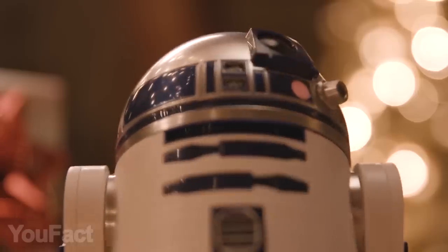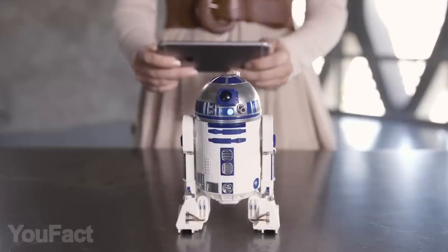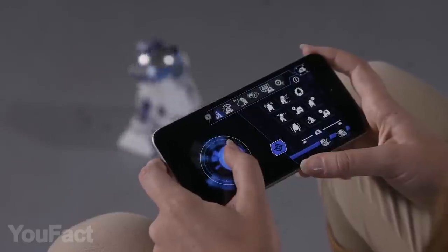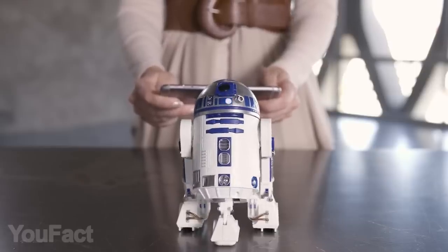Let's get straight to the point. This is an actual R2-D2 droid. Not just a model or something. It's actually a bit smaller and probably less intelligent, but it still looks so real. It's controlled remotely with an app that allows you to move it around and switch between bipod and tripod modes.